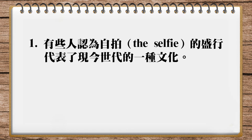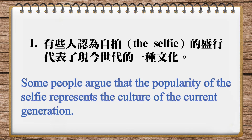大家注意到 'index' 这个字是指标的意思。'Contemporary' 就是目前的、当前的，'contemporary culture' 就是当今的文化。Or 'a sign of the times' — that's a really easy way to say it, quite good. Here's the translation in our magazine: some people argue that the popularity of the selfie represents the culture of the current generation. 'The current generation' 也可以，就当今这个世代，'current' 表示现在的、现行的。